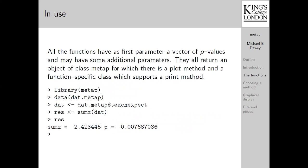So how do you use them? All the functions have as their first parameter a vector of the p-values and may have some additional parameters. They all return an object of class MetaP for which there is a plot method and a function-specific class which supports a print method. The example shows you loading the package, extracting a particular data set from the collection of data sets provided. It's one set of teacher expectancy ratings, and then using Stouffer's method on that, which is sumz. That returns the relevant statistic and the p-value. As you can see, this rejects the null hypothesis. You'll see the values of p for the teacher expect when we come on to the graphical display section.